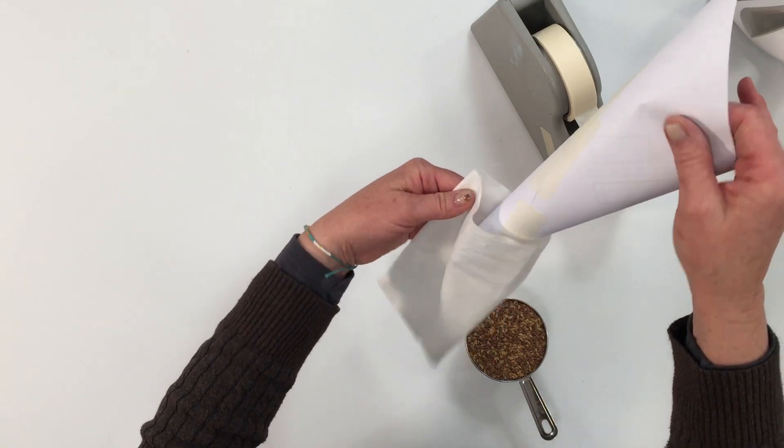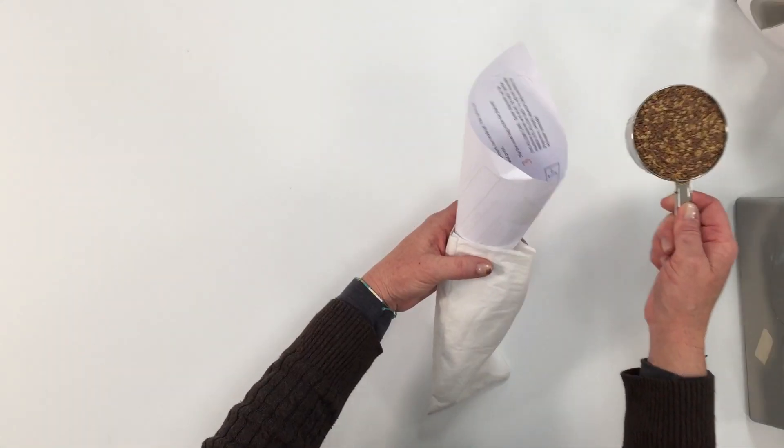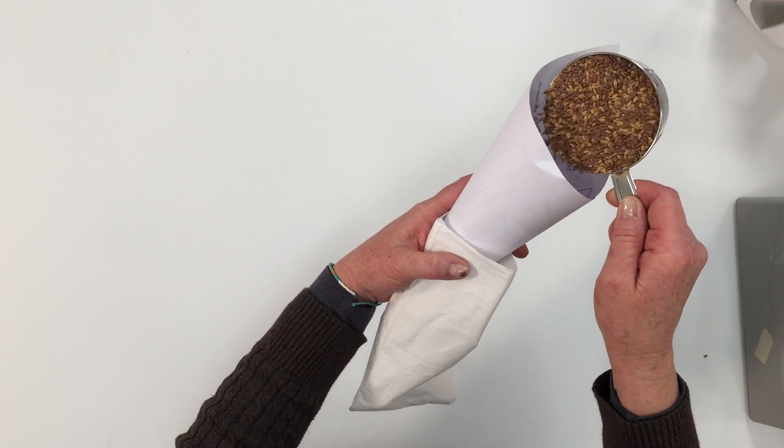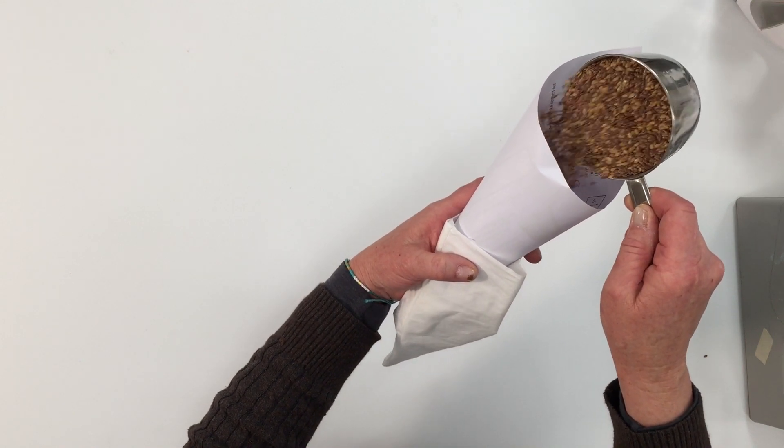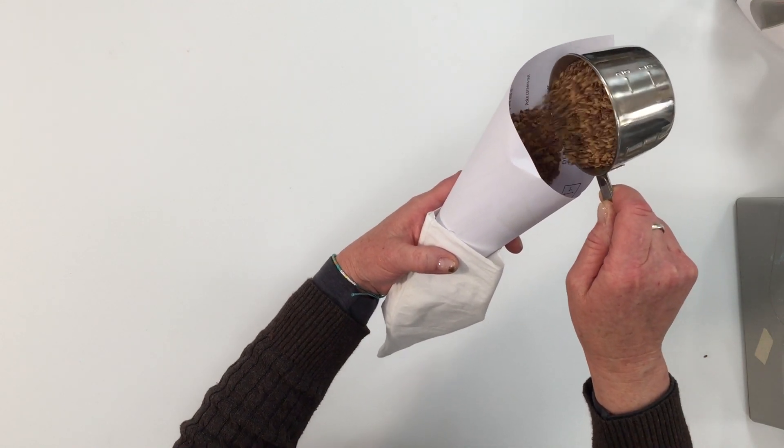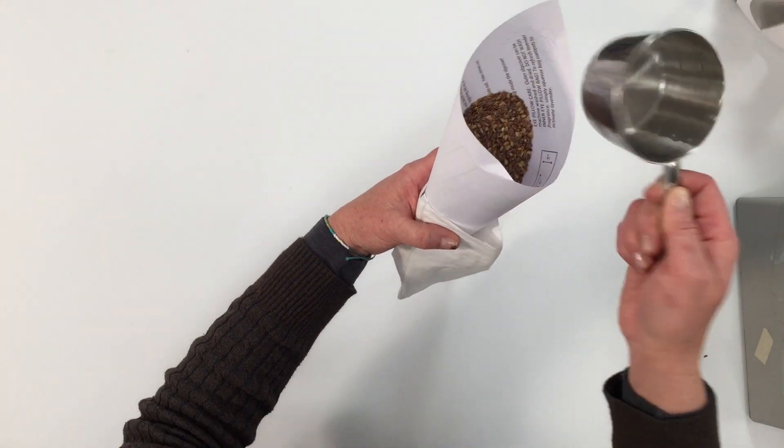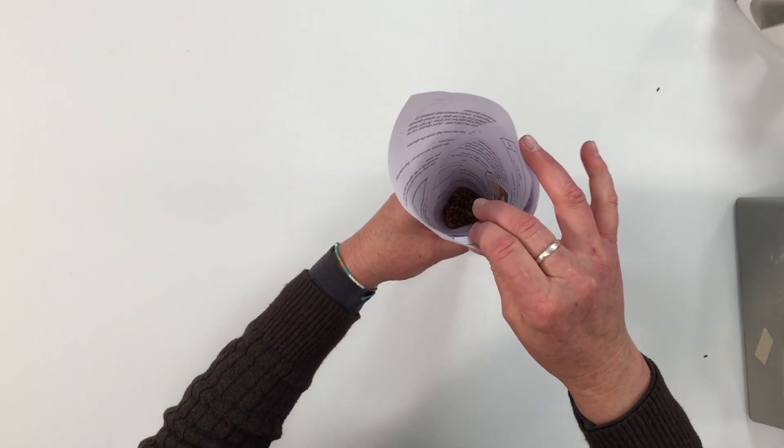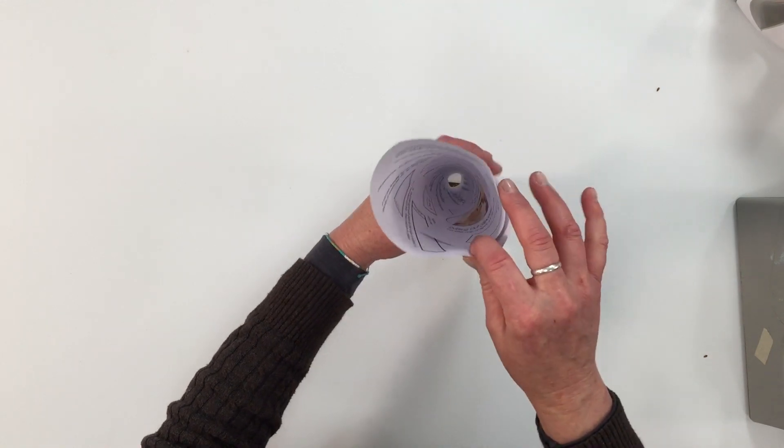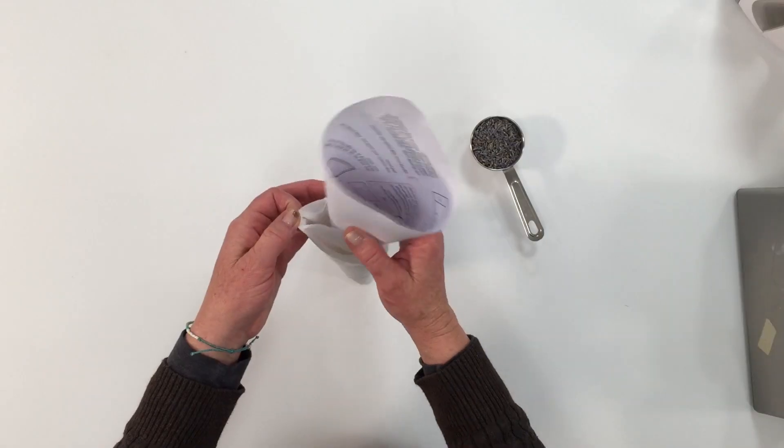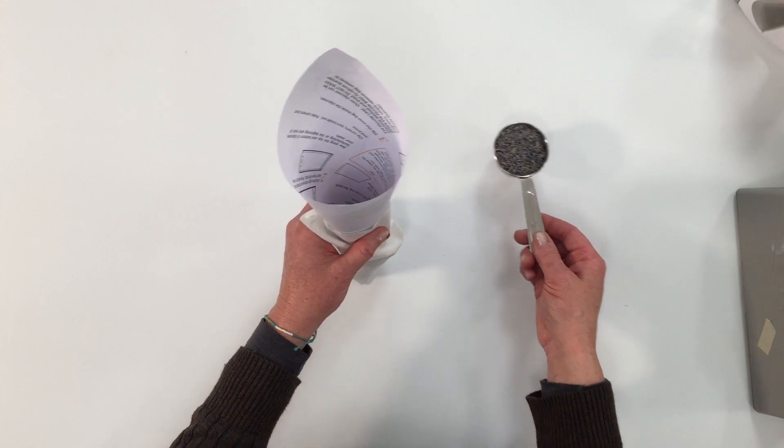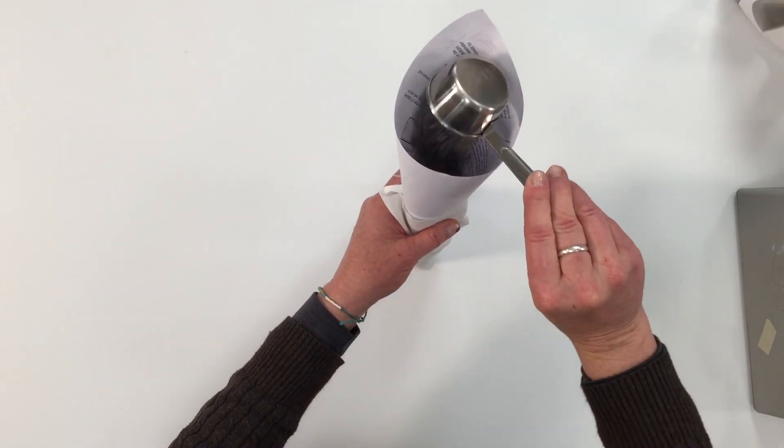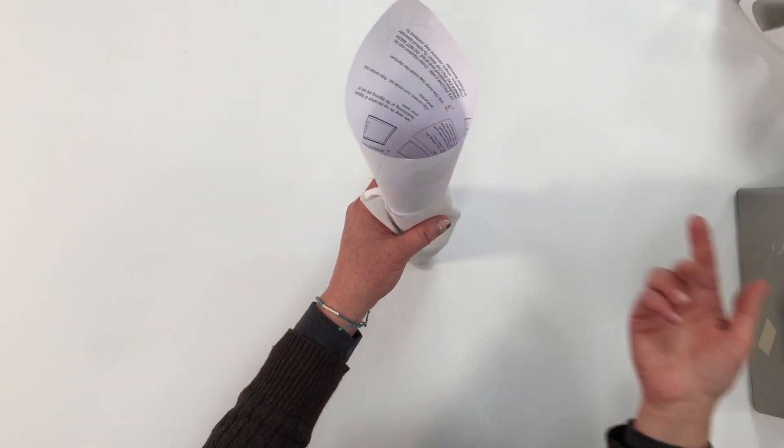So you have like a cone with that opening there. We're just going to shove that point down in there and just carefully dump in your flax seeds. Now if you are adding the dried lavender, you can add that now. And it's just a quarter cup.